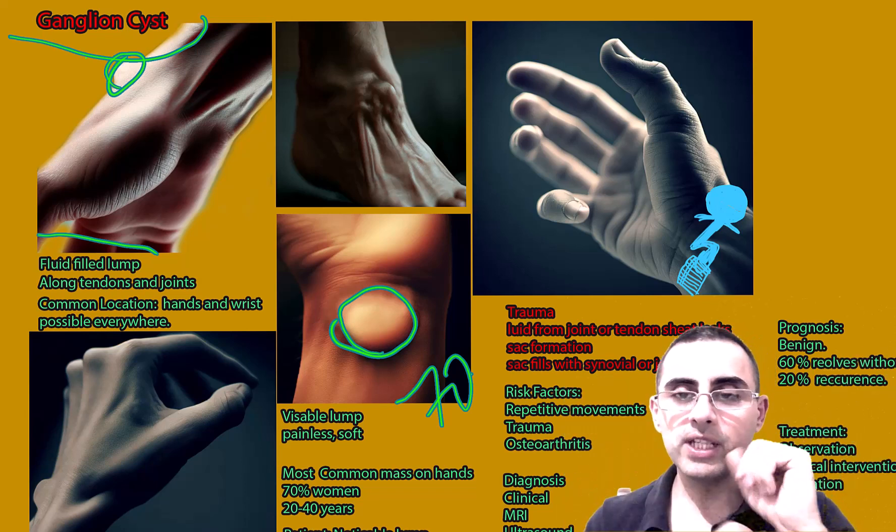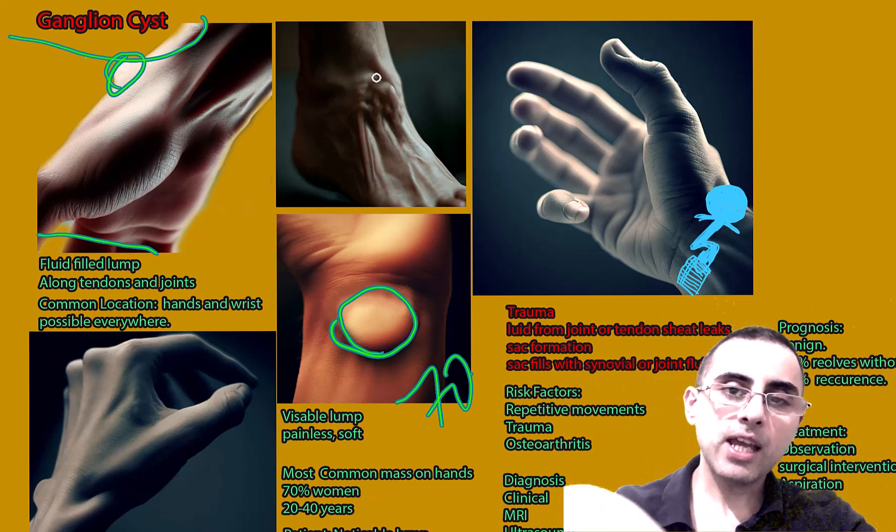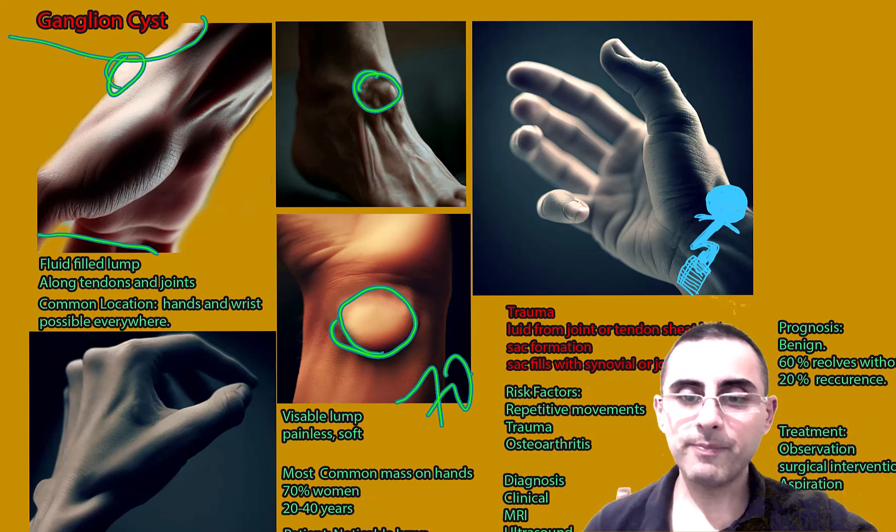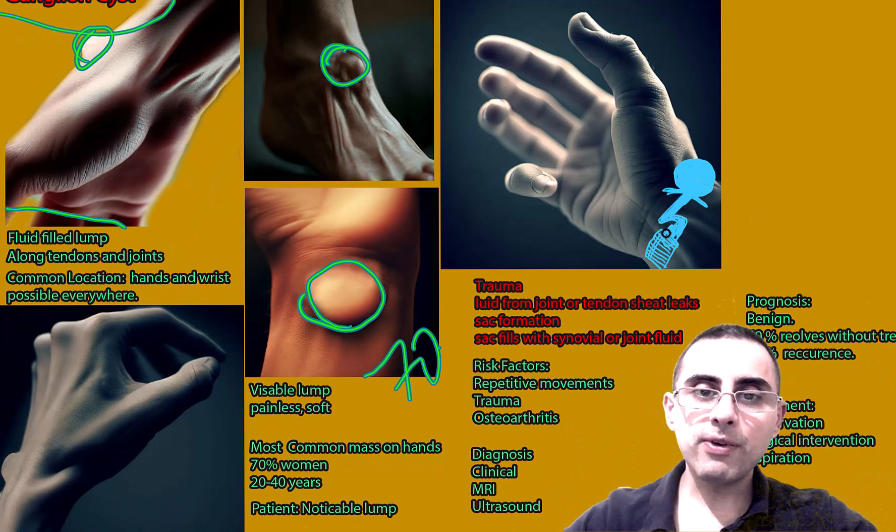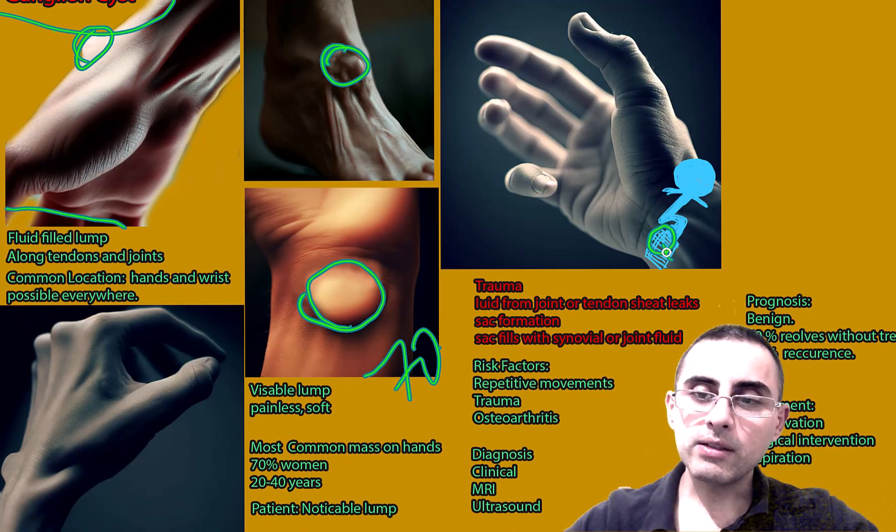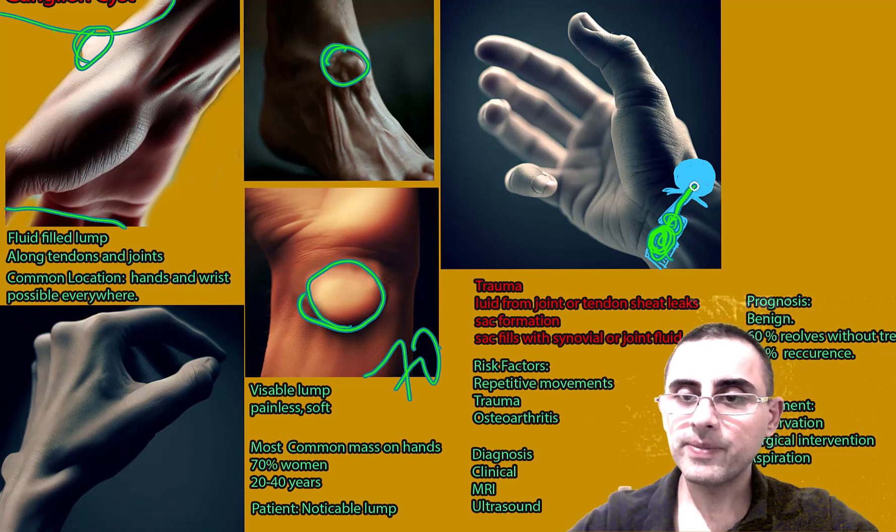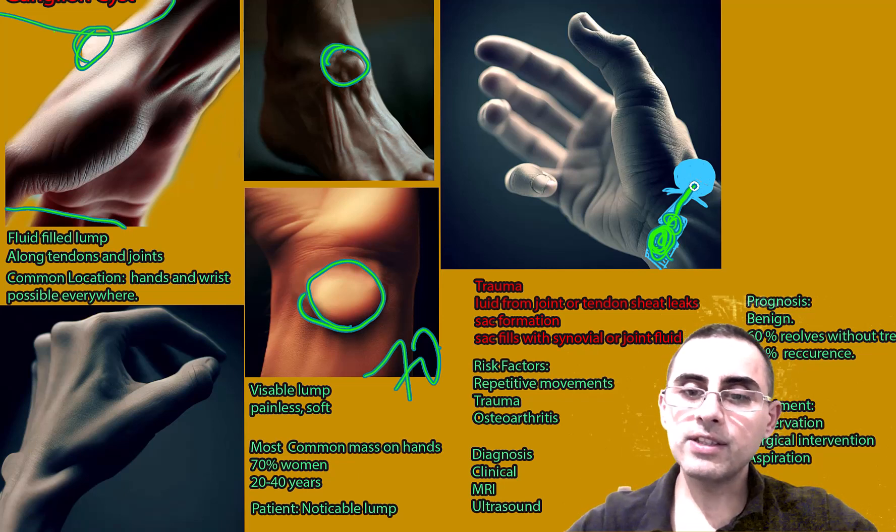It can develop almost everywhere, but most commonly on the hands and wrist, and sometimes on feet also. Other places are rare. How does it develop? It develops from a tendon or in your joints. From the joint, fluid is leaked and it creates a small sac. This sac will increase over time and creates this cyst.